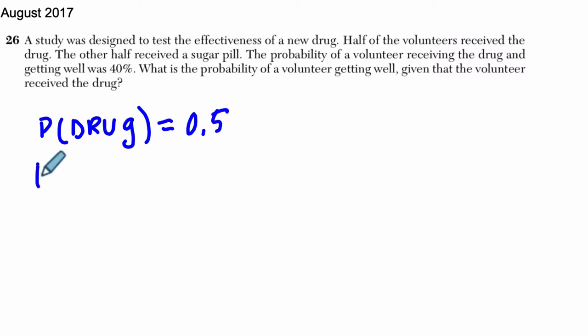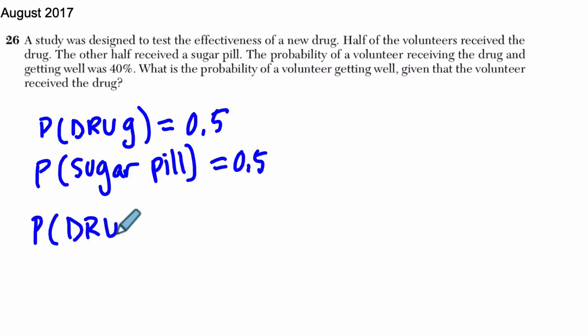The other half received a sugar pill. I am just writing this down as I go. So you've got one or the other. The probability of a volunteer receiving the drug and getting well is 40%. Okay, so the probability that you receive a drug and get well, so that's the intersection, that is 40%, 0.4.